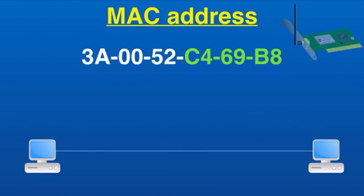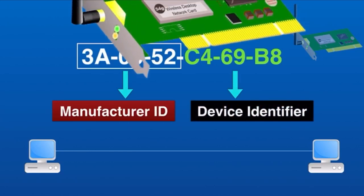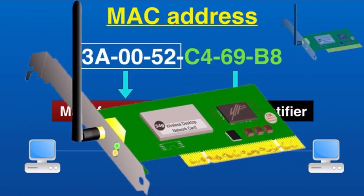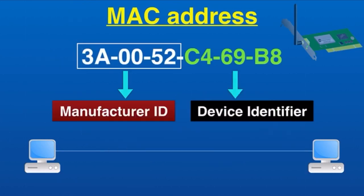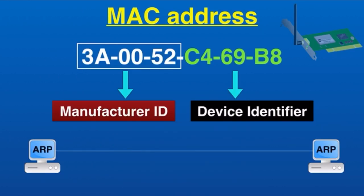Let's discuss the MAC address first. MAC address is a 48-bit address and consists of 12 hexadecimal digits, usually grouped into six pairs separated by hyphens. The first half is typically used as a manufacturer ID, while the second half is a device identifier. This number is hard-coded or burned into the NIC card during the manufacturing process — it is permanent and cannot be changed. MAC address is used at the data link layer of the OSI model.